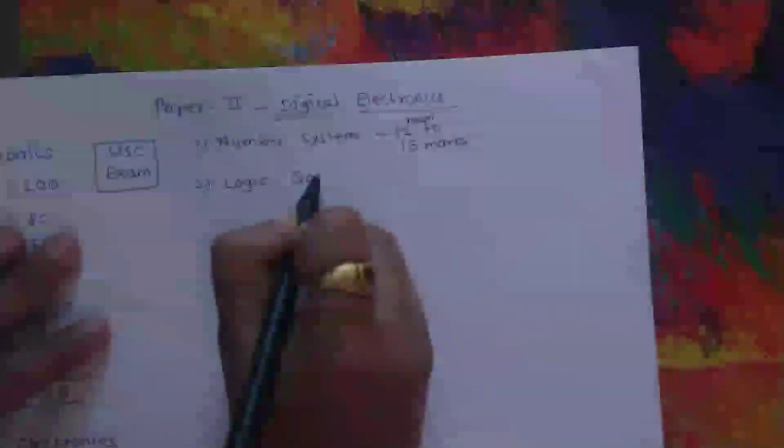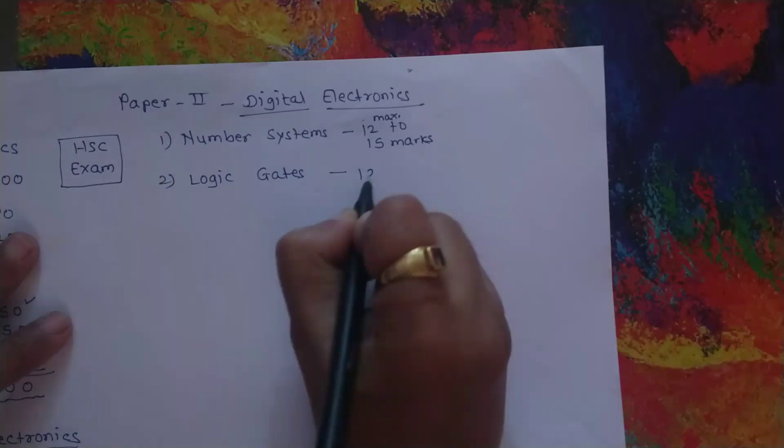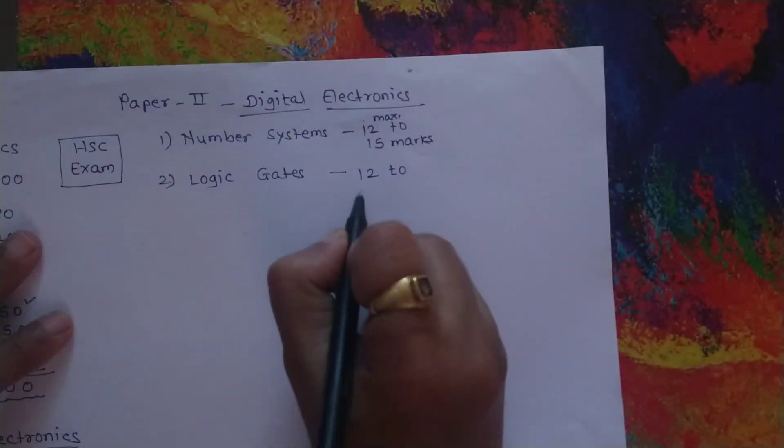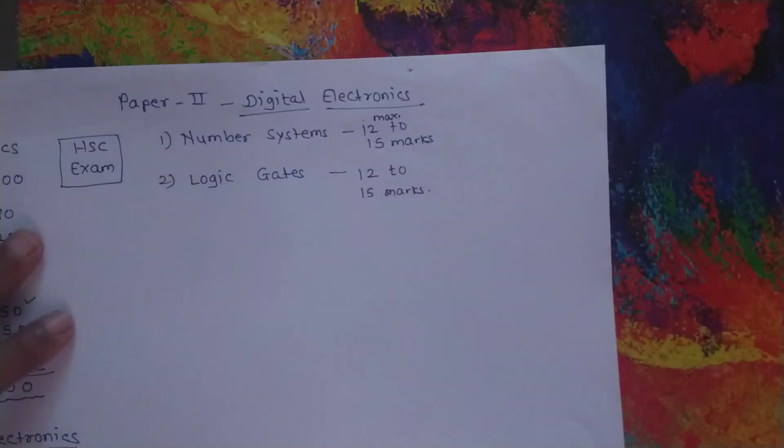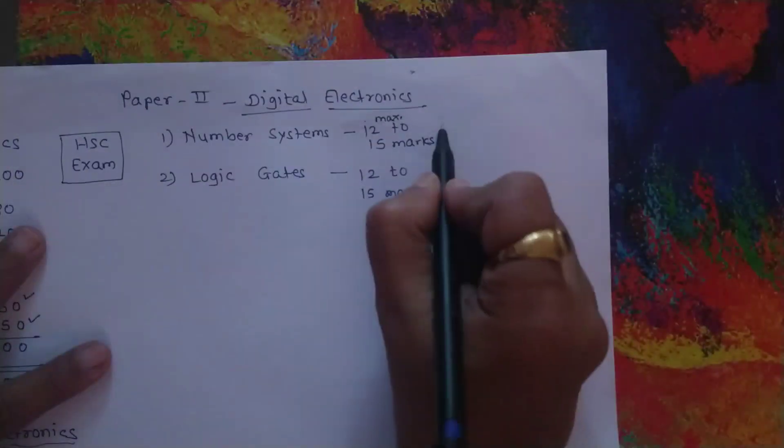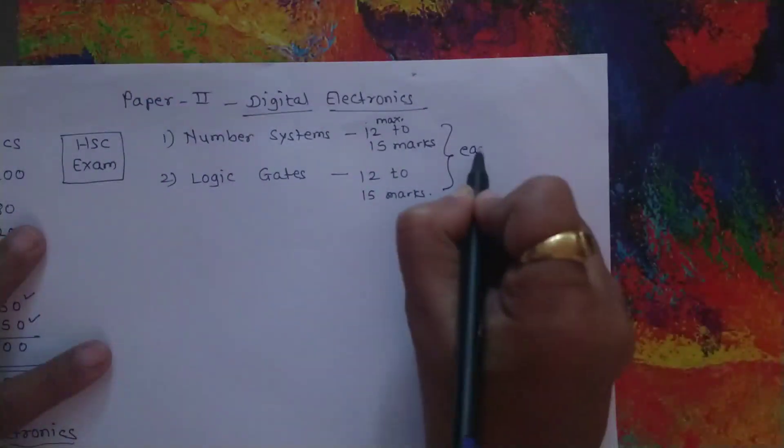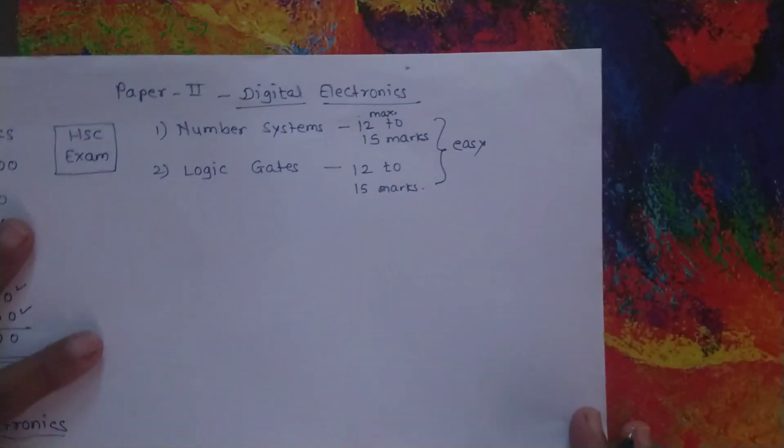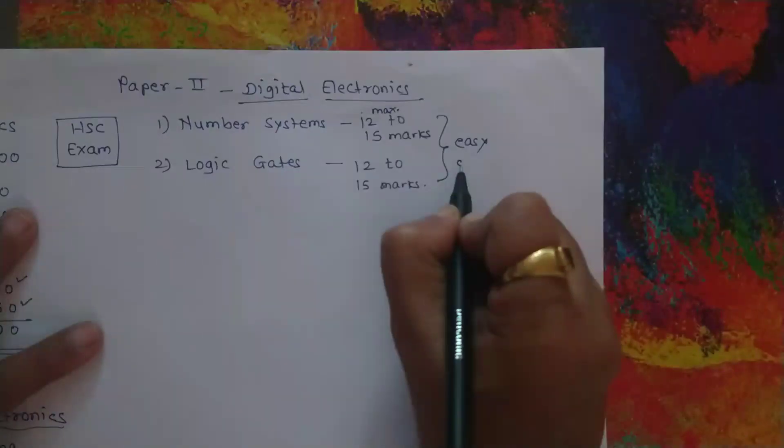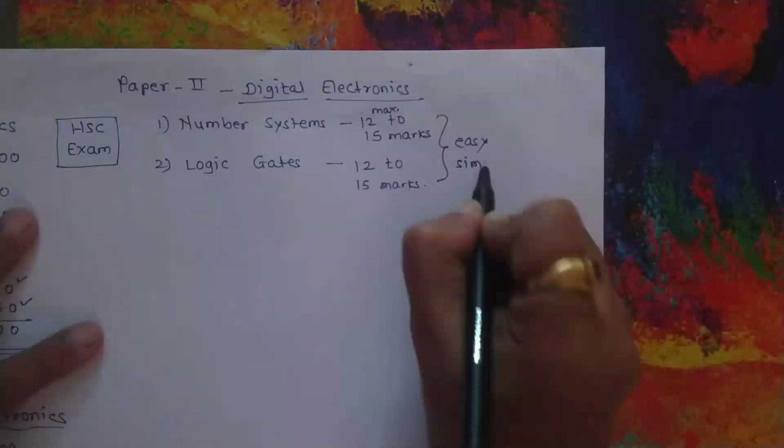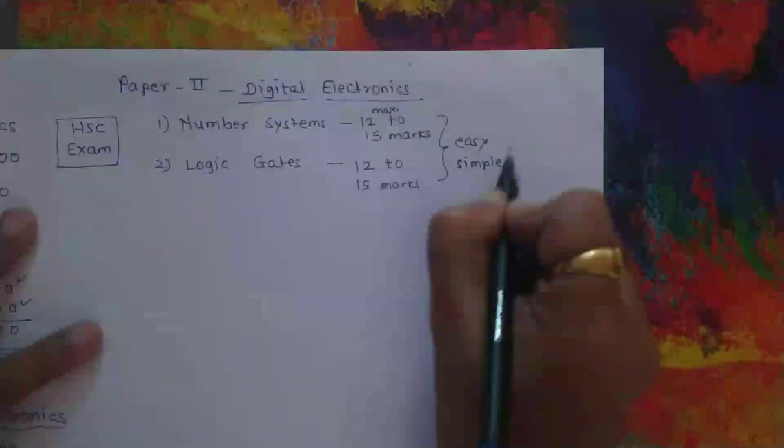The second chapter is logic gates, which also gives you a chance to score maximum like 12 to 15 marks. Both these chapters are very easy, simple in understanding, and scoring.